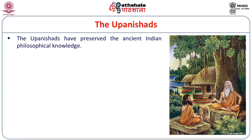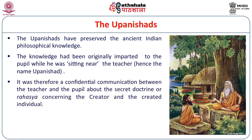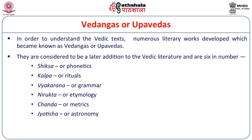The Upanishads have preserved ancient Indian philosophical knowledge, originally imparted while students sat near the teacher — a confidential communication concerning the creator and the created individual. The last part of the Vedic literature consists of the Vedangas, which conclude the Vedic corpus. They consist of six parts: Shiksha or phonetics, Kalpa or rituals, Vyakarana or grammar, Nirukta or etymology, Chanda or metrics, and Jyotis or astronomy.